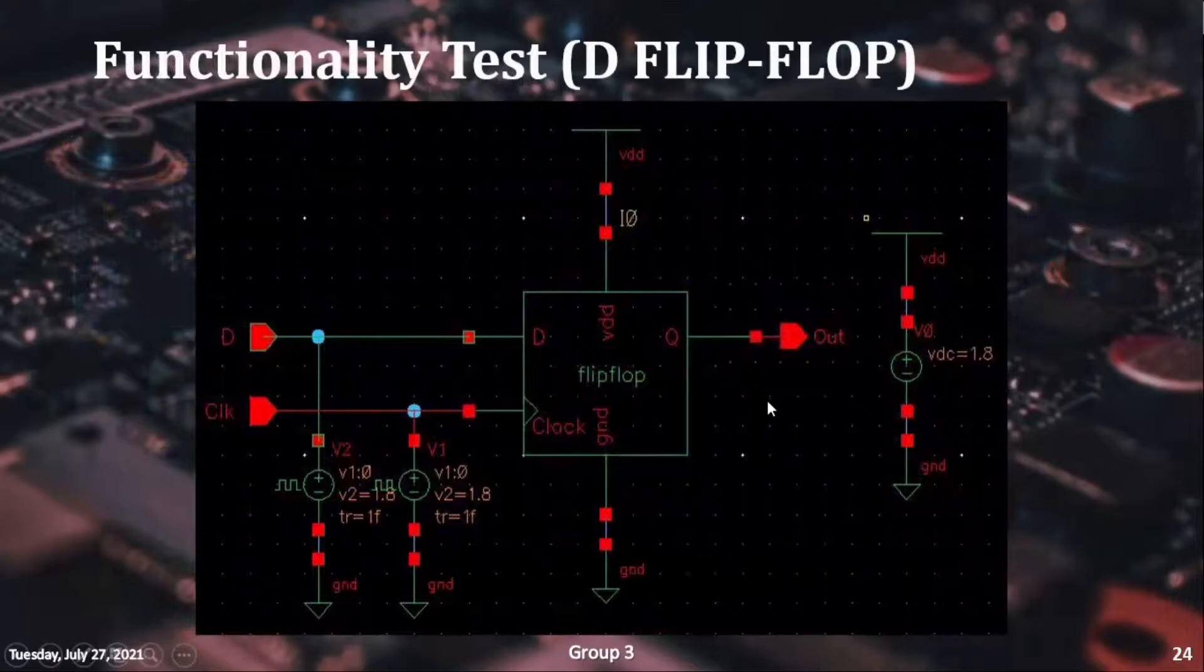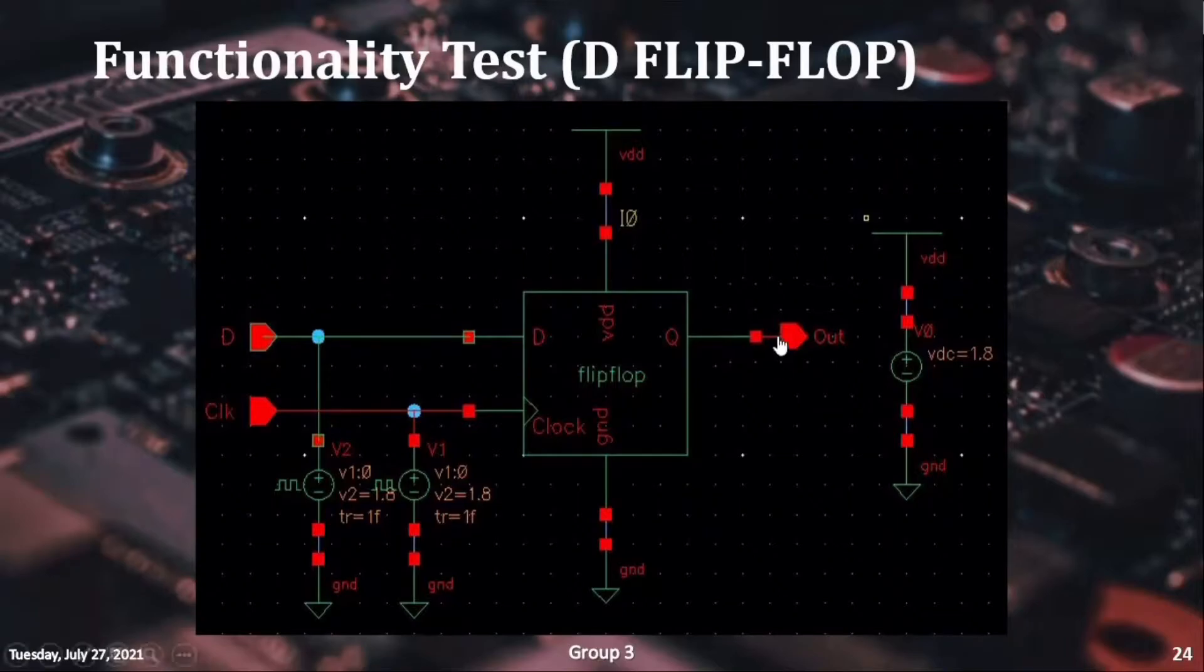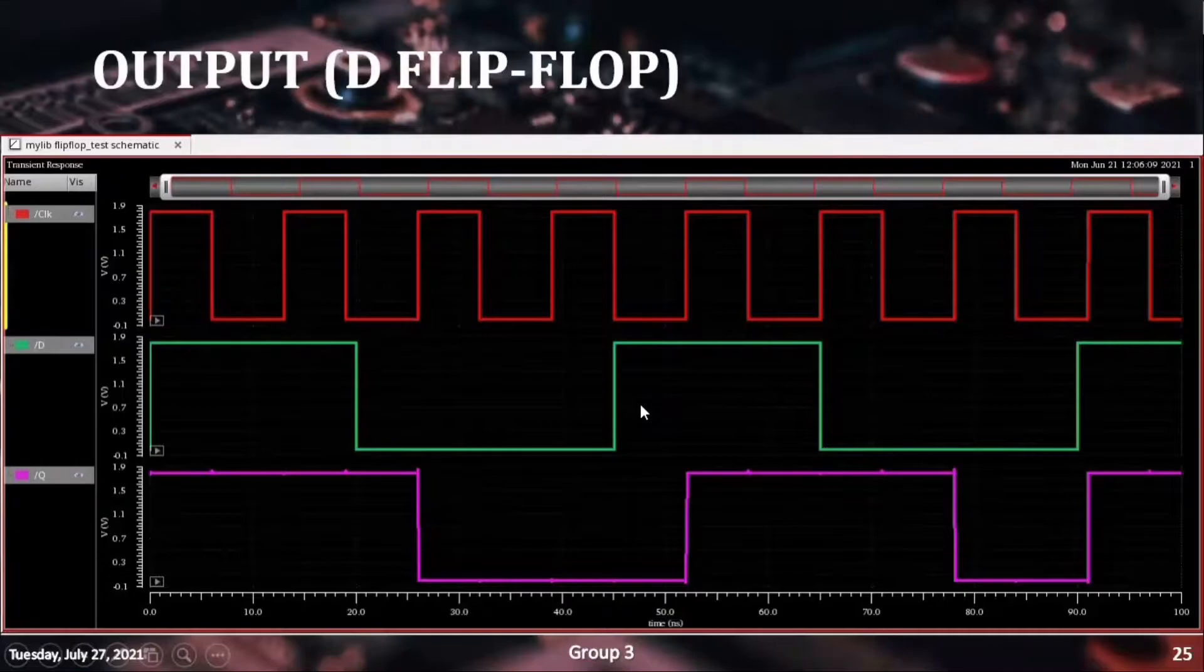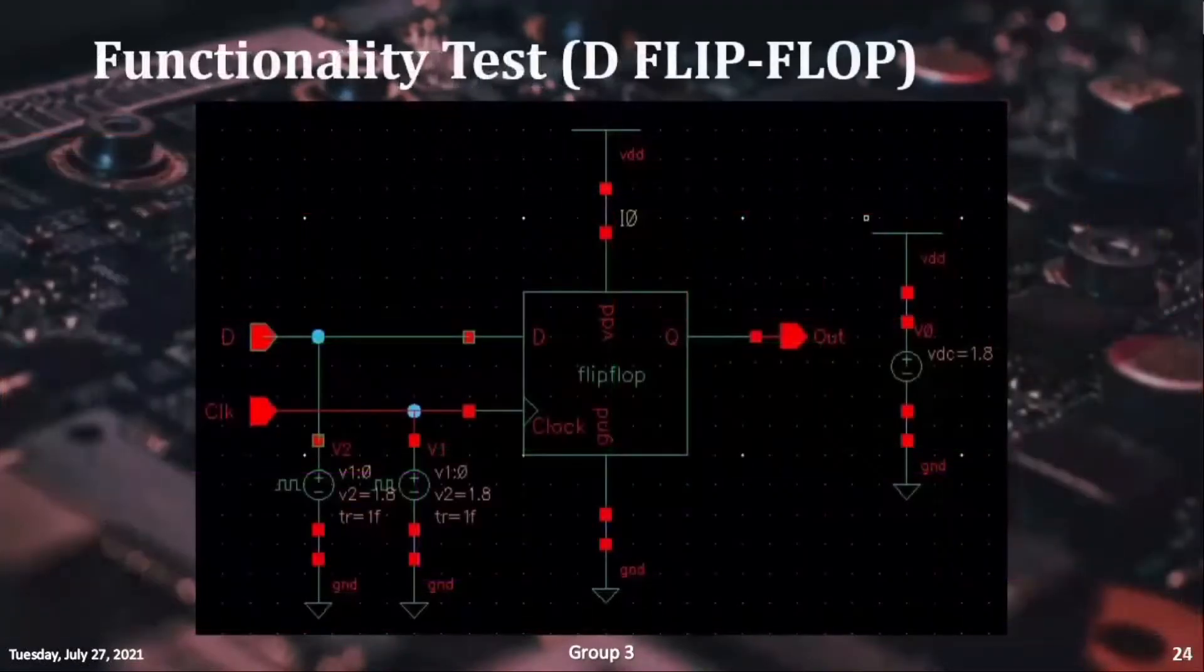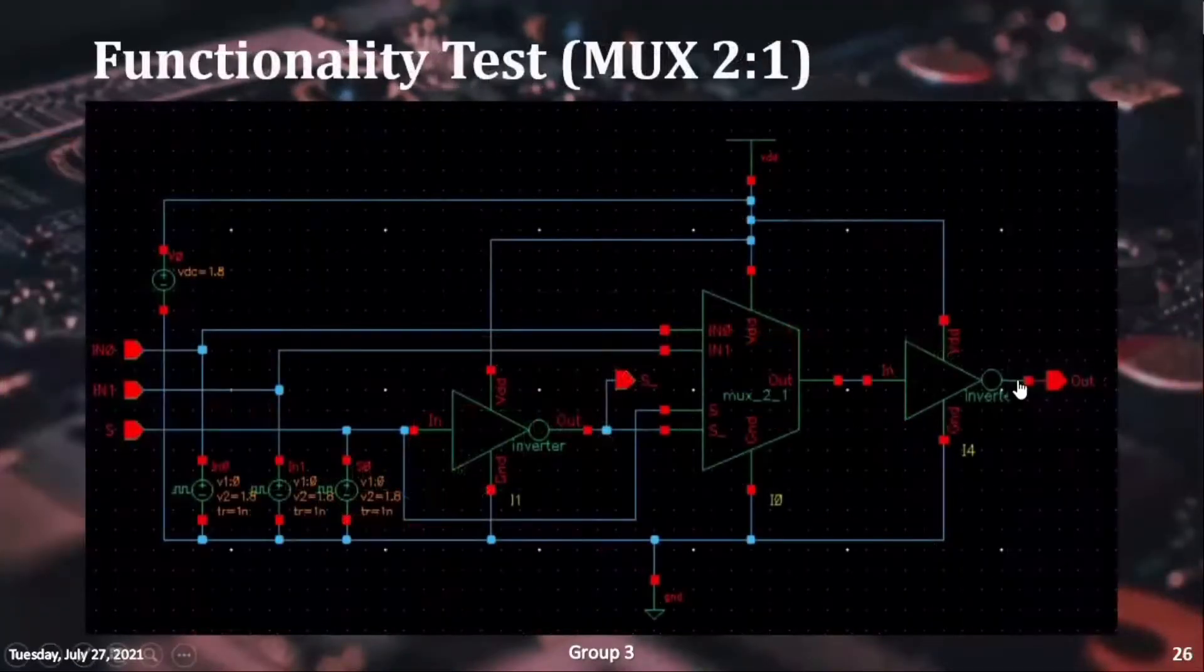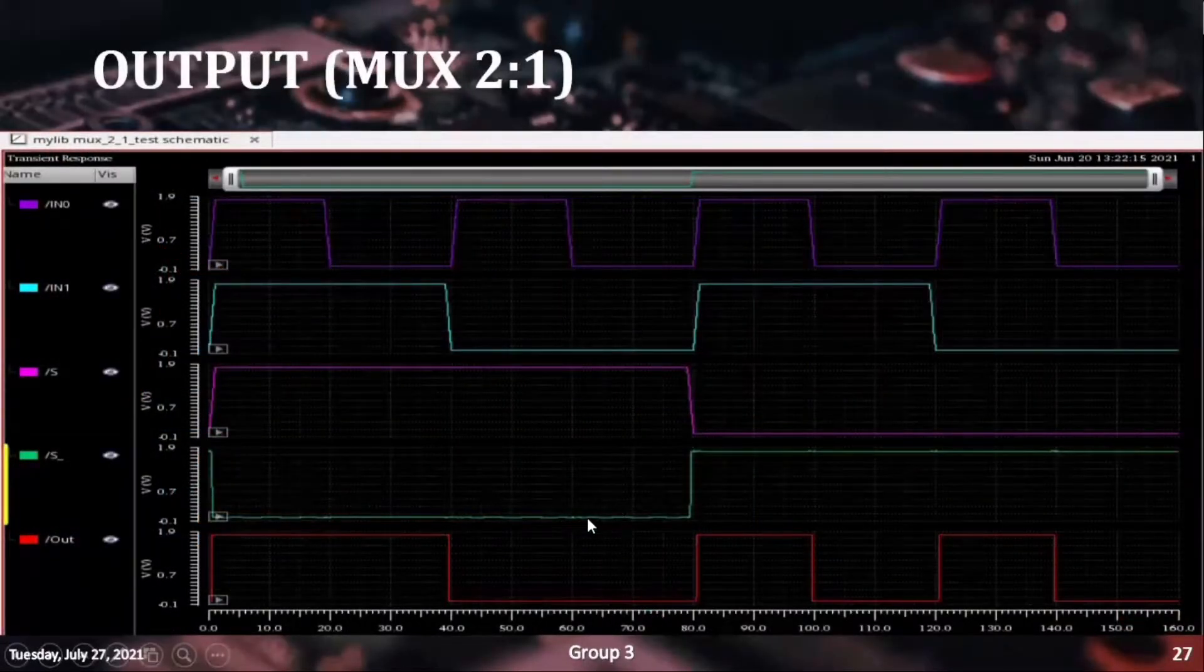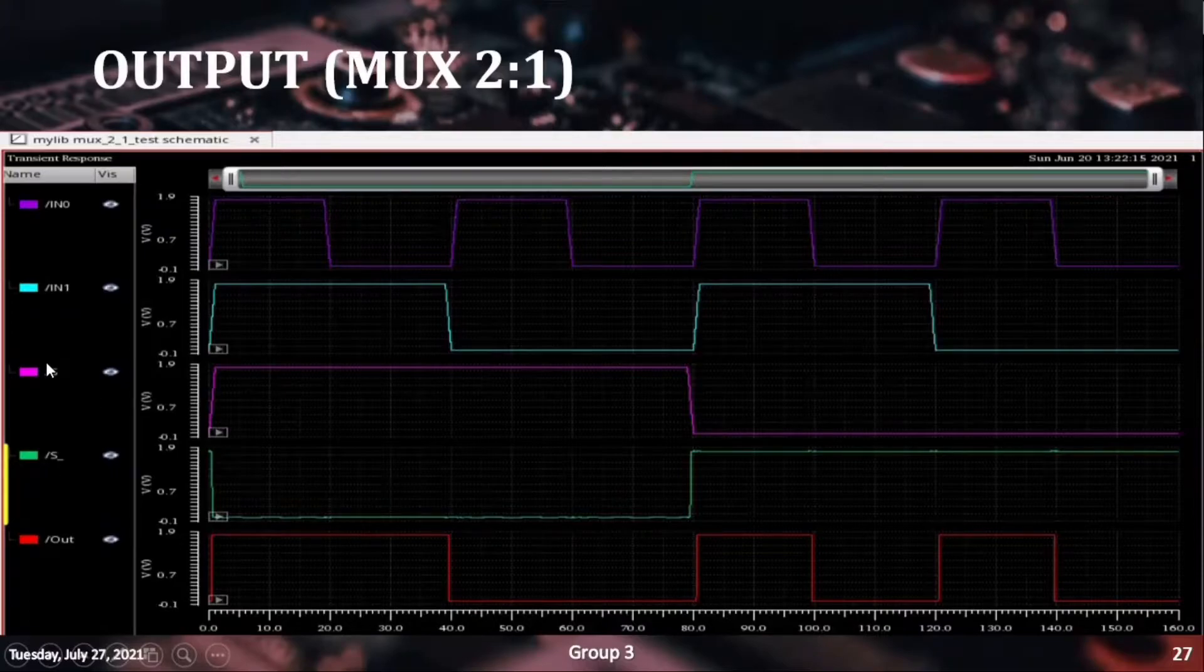Each of the components of CLB was tested using separate circuits prior to combining into a single design. Here we can see the sequential nature of the flip-flop block. In the multiplexer test circuit, we can see how two input channels are passed onto the output depending on the select pins.